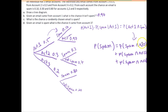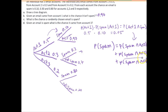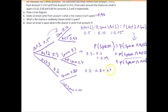We can find each joint probability by multiplying the branches. So 0.5 times 0.1 gives us 0.05 for spam and account 1. Multiplying those branches for account 2, we get 0.3 times 0.3, which gives us 0.09. And lastly, multiplying the two branches for account 3, we get 0.2 times 0.8, which is equal to 0.16.